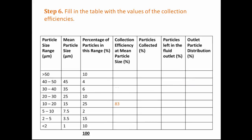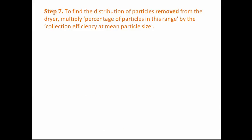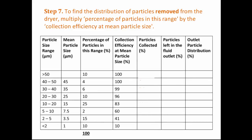We fill in the data found from the collection efficiency curve. The next column is the percentage of particles collected — this tells us the percentage of particles by mass leaving through the particles outlet. We find this by multiplying the percentage of particles in each range by the collection efficiency. For example, 10% of the particles entering the system are greater than 50 micrometres, and 100% of these are collected and leave through the particles outlet. So the third column is multiplied by the fourth column to fill in the whole fifth column.